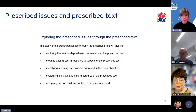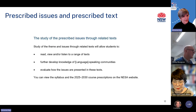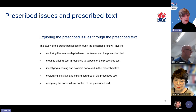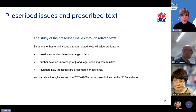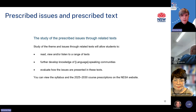The prescribed issues must be explored through the prescribed text, which involves exploring the relationship between the issues and the prescribed text, identifying meaning and how it is conveyed, evaluating linguistic and cultural features, and analysing the socio-cultural context of the prescribed text. The prescribed issues must also be explored through the related texts, which allow students to read, view and/or listen to a range of texts, further develop knowledge of the language speaking communities, and evaluate how the issues are presented in these texts. In the next section, we will look more closely at our support materials, which unpack both the study of the prescribed texts and related texts.